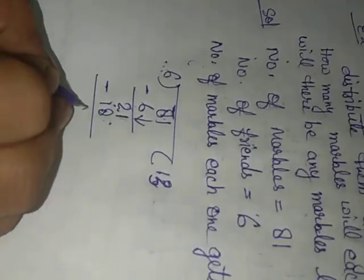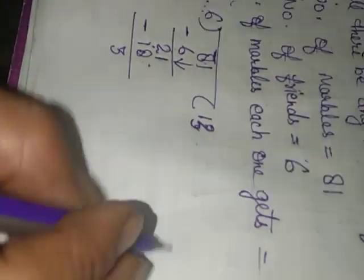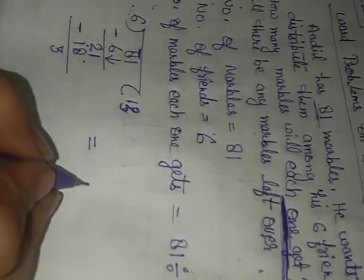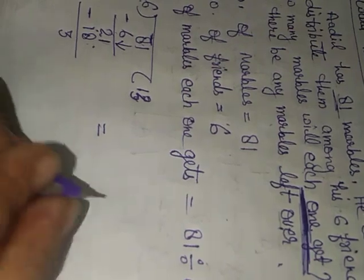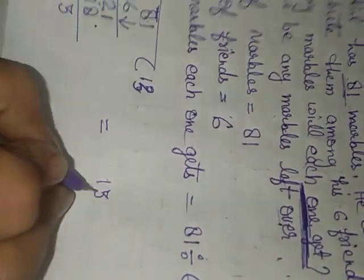Now 21 minus 18 is 3. Each one will get 13 marbles and 3 marbles will be left over.